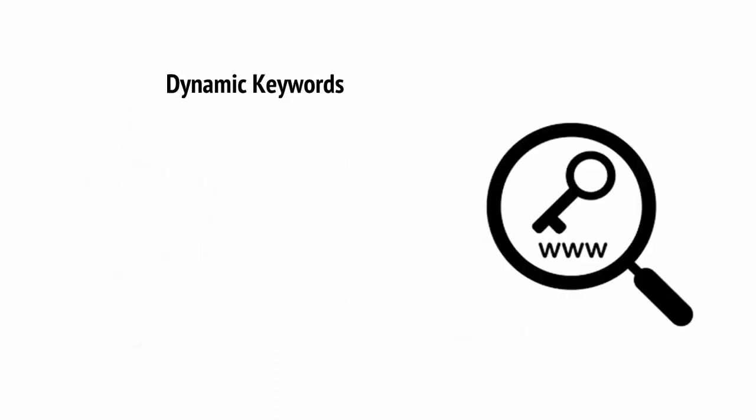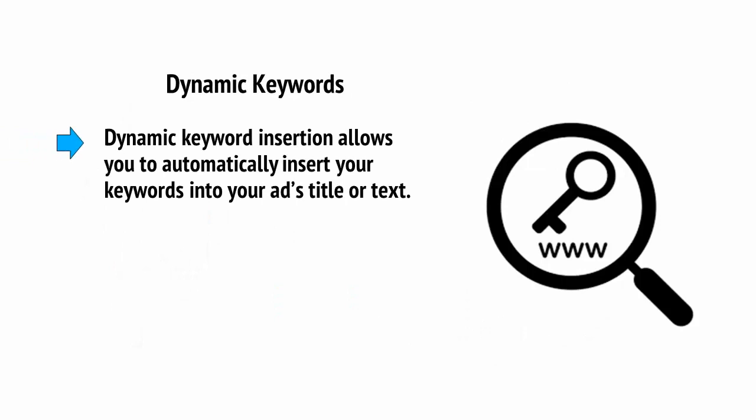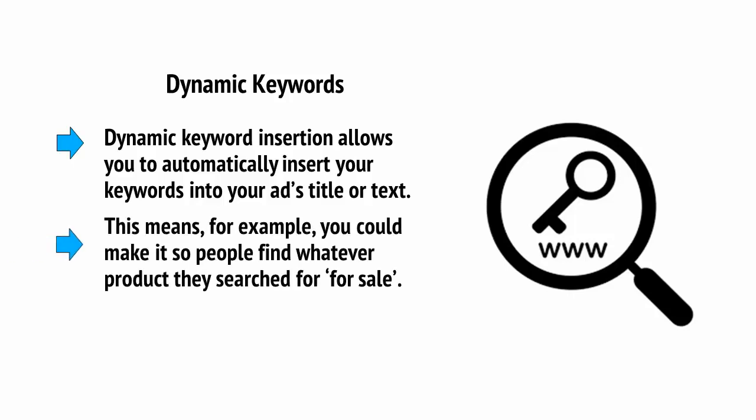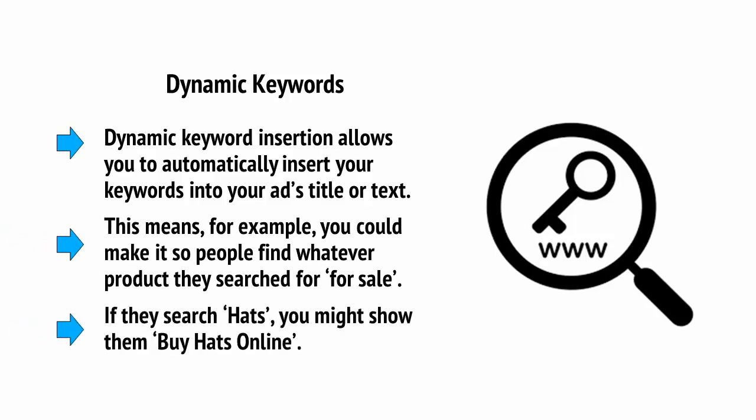Then there are dynamic keywords. Dynamic keyword insertion allows you to automatically insert your keywords into your ad's title or text. This means that, for example, you could make it so people find whatever product they search for listed for sale — if they search 'hats', then you might show them 'buy hats online'.